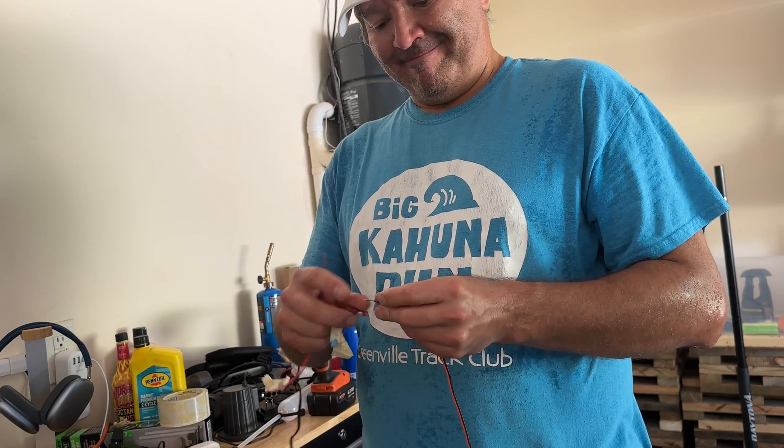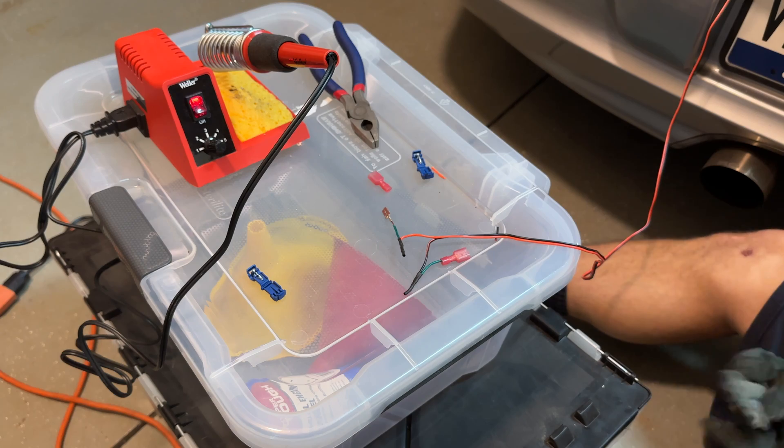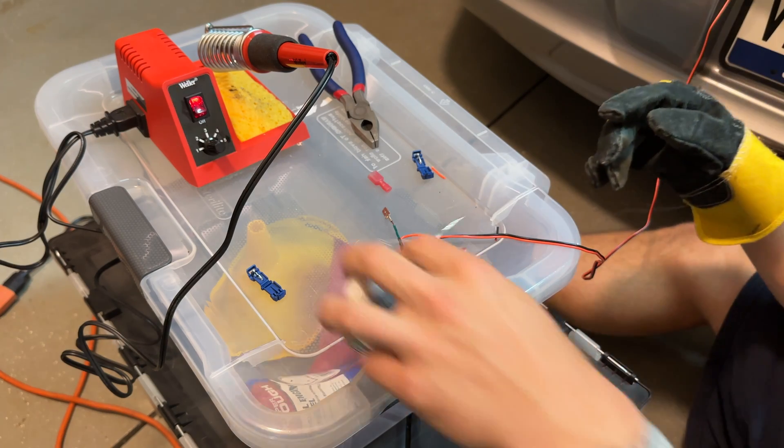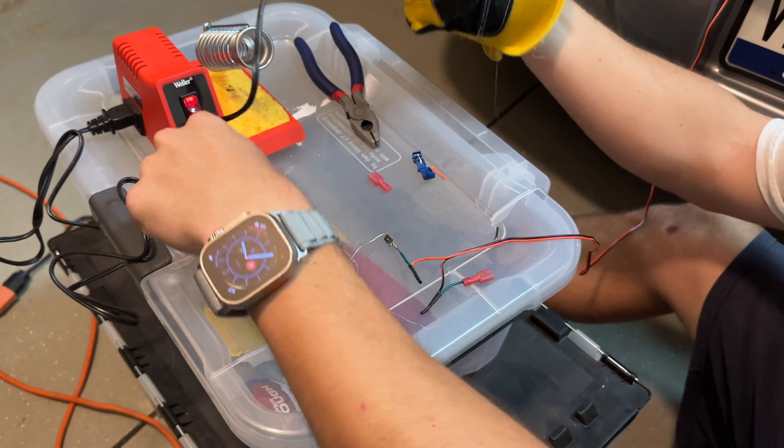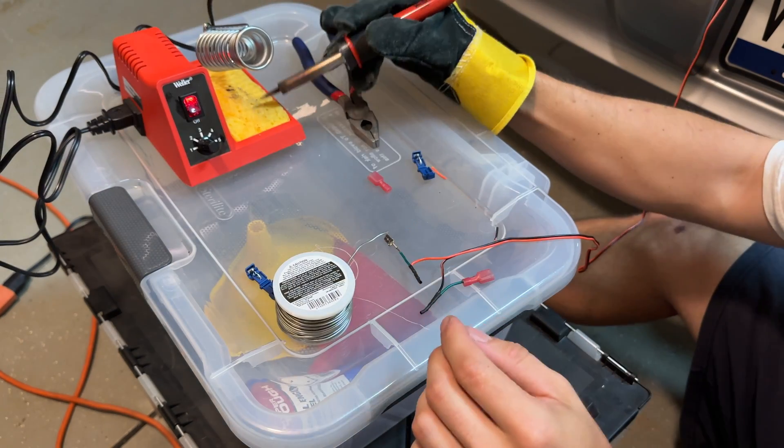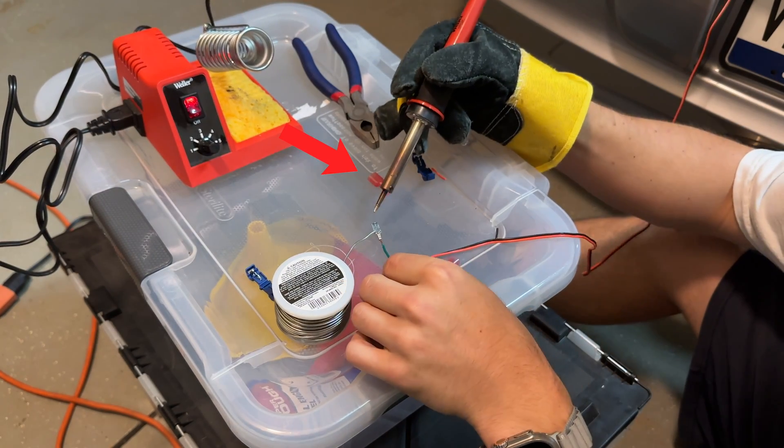Take your T-tap male connector and remove the metal prong from the housing. Put the housing on the wire. Strip a decent length of wire. With the housing on the wire, yes, you're bound to forget it at least once or twice like I did.